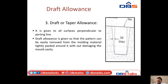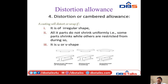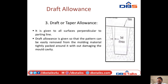Next one is draft allowance. It is given to all surfaces perpendicular to the parting line. Draft allowance is provided so the pattern can be easily removed from the mold material tightly packed around it without damaging the moulding cavity. This is called draft allowance.